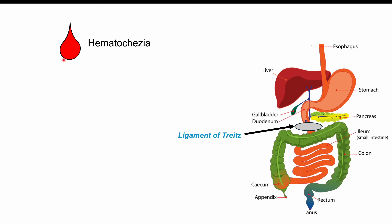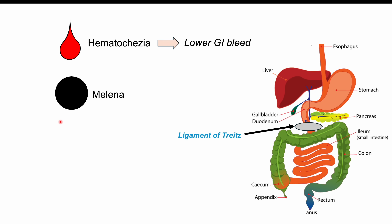With active bleeding from an angiodysplasia appearing red — for example, visible in the toilet bowl — that is called hematochezia, meaning red blood in the stool, indicative of a lower GI bleed below the ligament of Treitz. Black, tarry, smelly stool is melena, a sign of upper GI bleeding, where blood has had time to be digested into a black tarry substance.